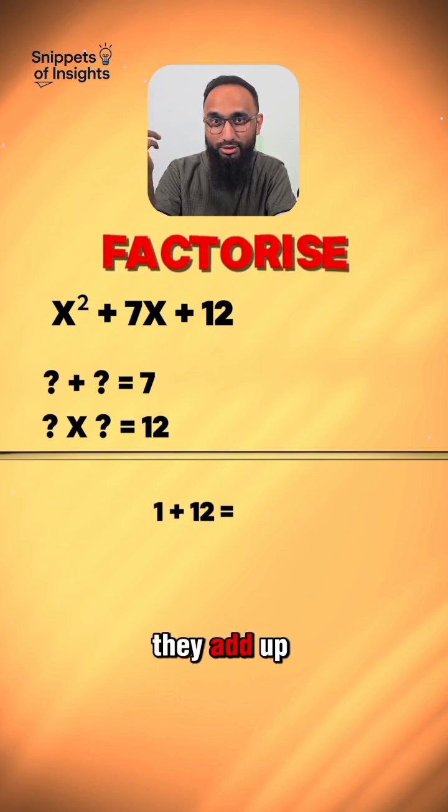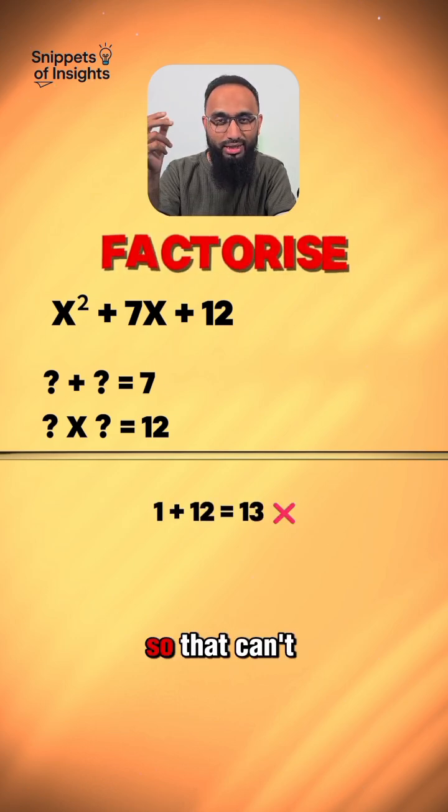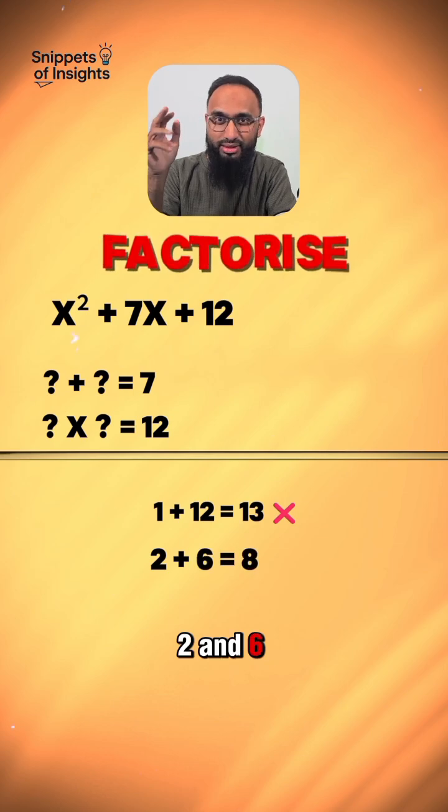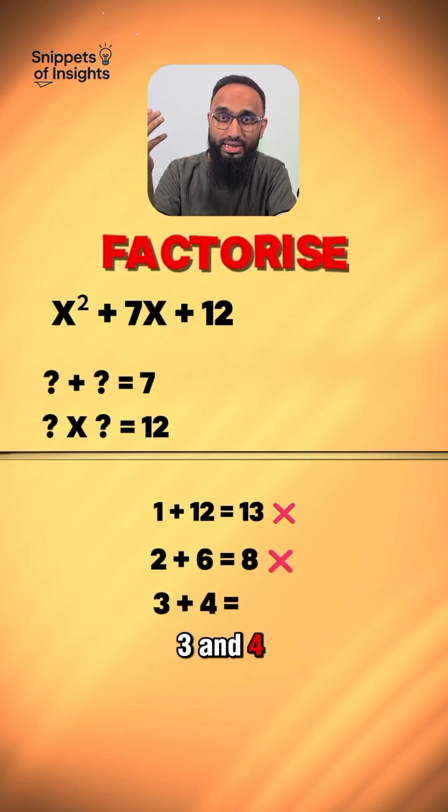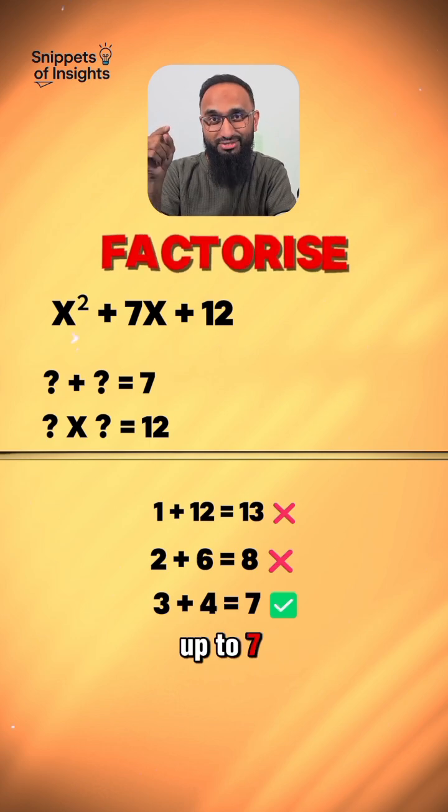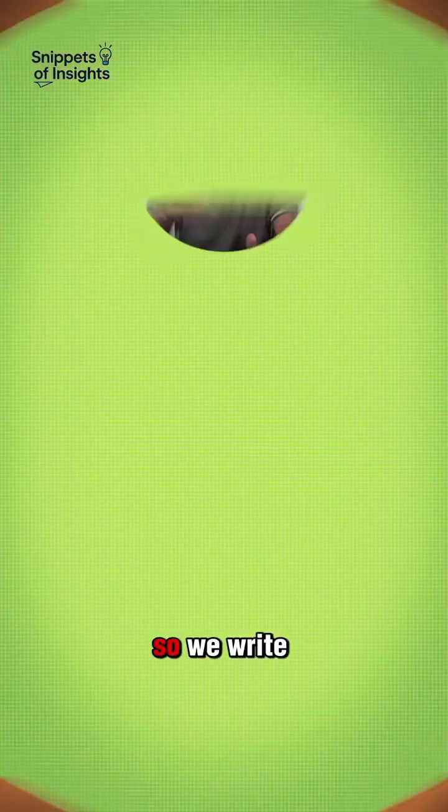1 and 12, they add up to 13, so that can't be it. 2 and 6, they add up to 8, so still nope. 3 and 4, well they add up to 7, so bingo!